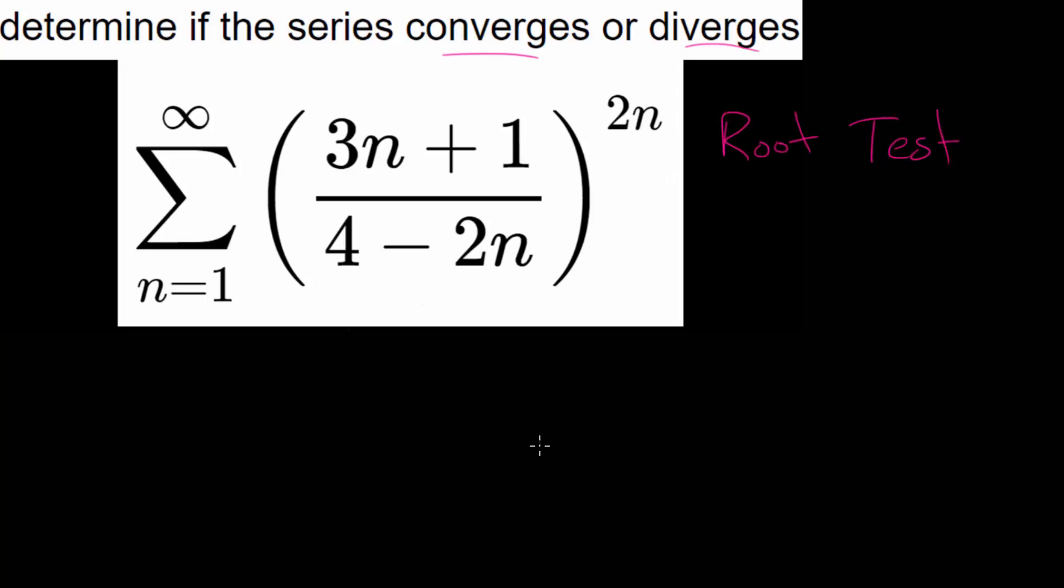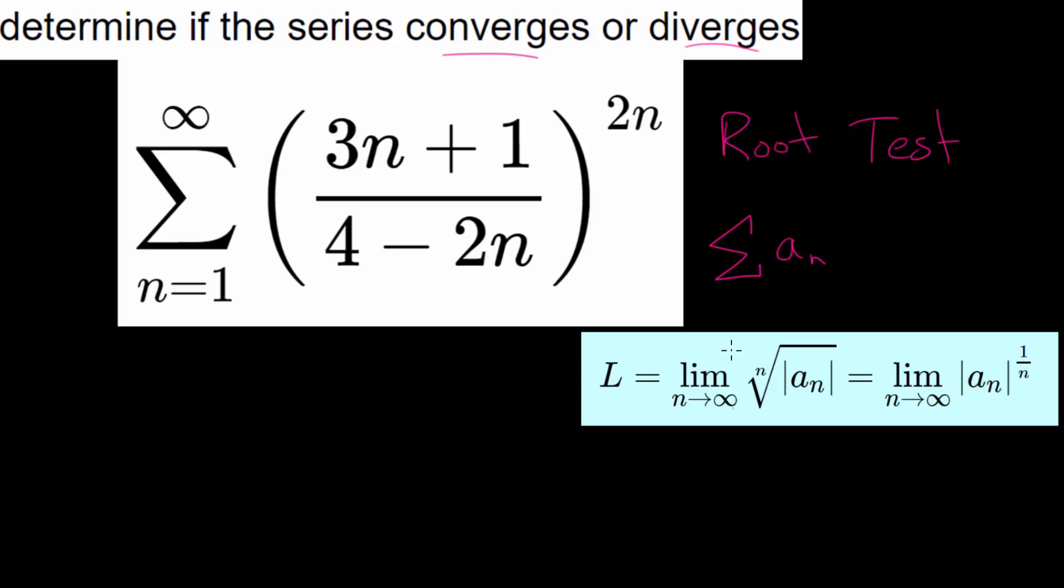And let me just paste in what the root test is. Let's assume that we have some series, a sub n, or summing up this sequence, a sub n. And we can define this limit, L, such that we'll let n approach infinity, and we'll look at this sequence here, this a sub n. We'll take its absolute value, and then we'll take the nth root of that. And, of course, we could rewrite it as the absolute value of a sub n to the 1 over n power.